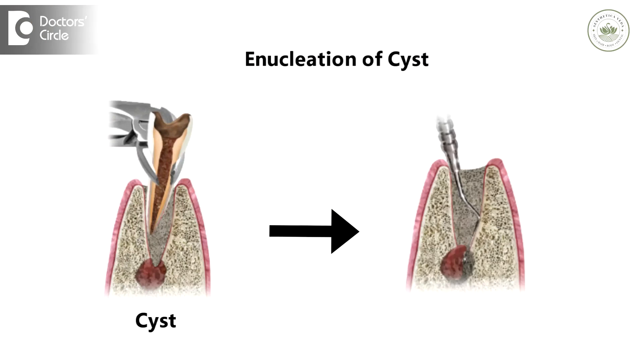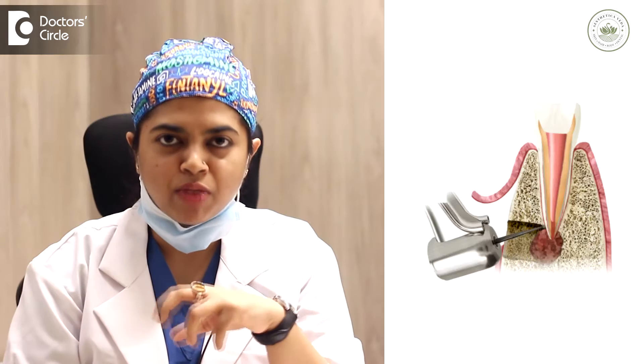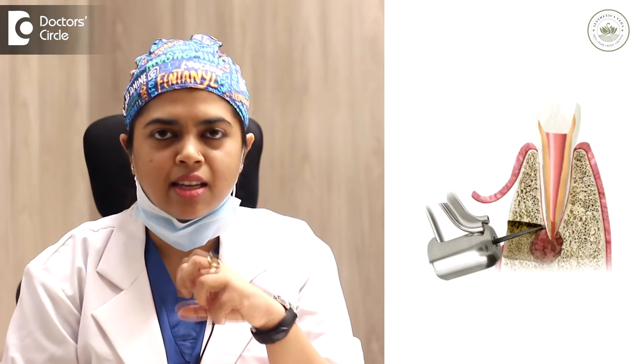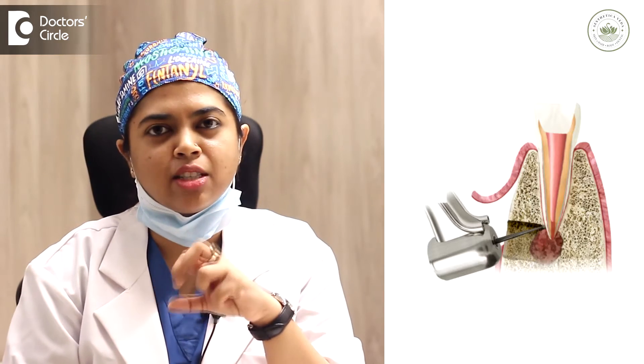How do we treat these jaw cysts and tumors? Cysts are generally treated with an enucleation procedure, where we remove the entire cyst, the associated tooth and its lining, and remove the remnant cells around it to clear it.